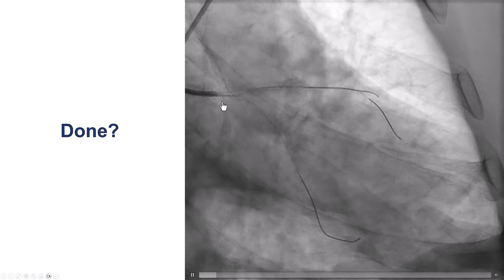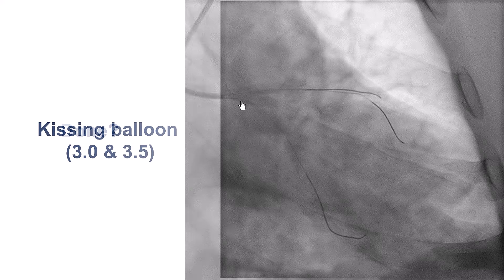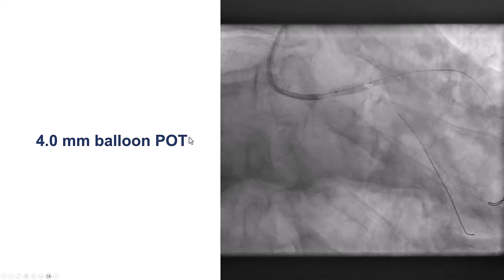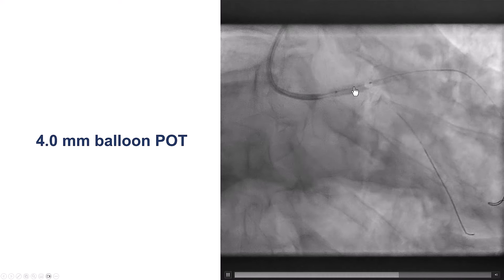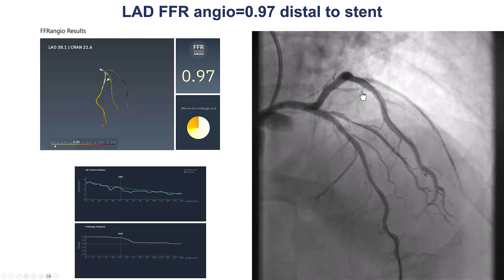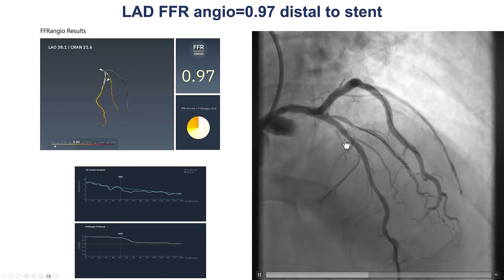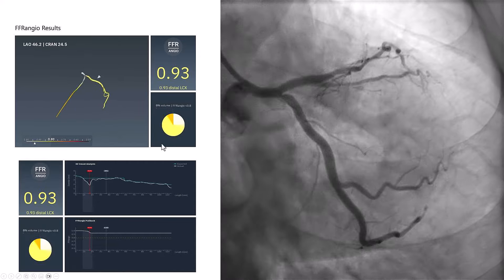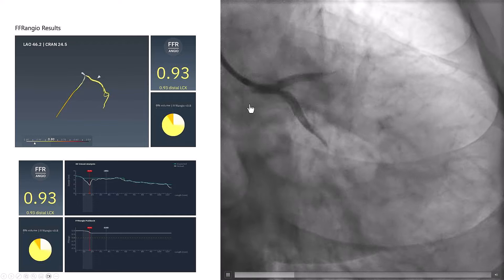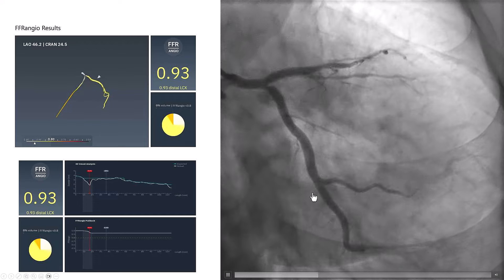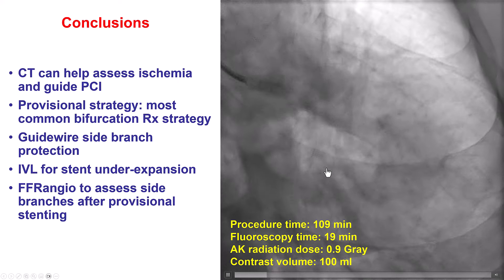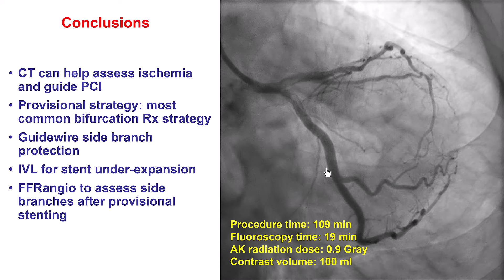The circumflex still did not look optimal, so we performed a kissing balloon inflation with a 3.5 and 3.0-millimeter balloon, followed by another proximal optimization with a 4.0-millimeter balloon. FFR angio on the LAD afterwards was good, though there was some diffuse disease further down. FFR angio on the circumflex was 0.93, confirming no significant stenosis. The patient had a nice result with resolution of his symptoms.